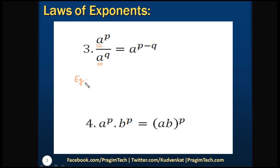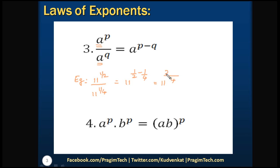Example: 11 to the power of 1/2 divided by 11 to the power of 1/4. According to this law we write it as 11 to the power of (1/2 − 1/4). The LCM of 2 and 4 is 4, so 2/4 − 1/4 = 1/4. This equals 11 to the power of 1/4.